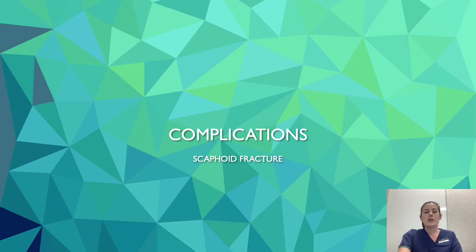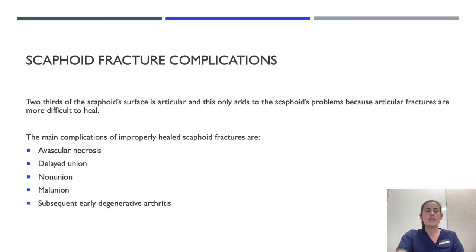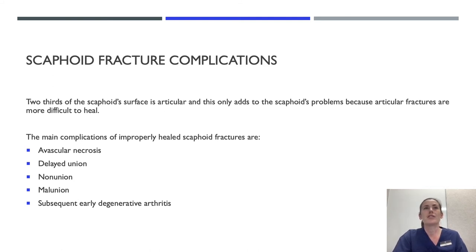Some complications of scaphoid fractures: two-thirds of the scaphoid surface is articular, which only adds to the problems because articular fractures are more difficult to heal. The main complications of improperly healed scaphoid fractures are avascular necrosis, delayed union, non-union, malunion, and subsequent early degenerative arthritis.